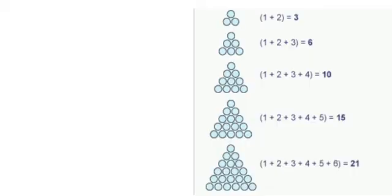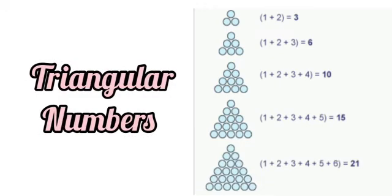Now, next — triangular numbers. See the arrangements of dots in the following figures. Here, dots are arranged in triangular form. In the first figure, 1+2=3. In the next figure, 1+2+3=6. In the next figure, 1+2+3+4=10.